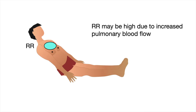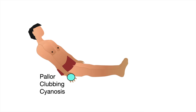We look at the respiratory rate, which may be high due to increased pulmonary blood flow. We look for pallor, clubbing, and cyanosis. Cyanosis would be indicative of Eisenmenger's syndrome, as would clubbing.